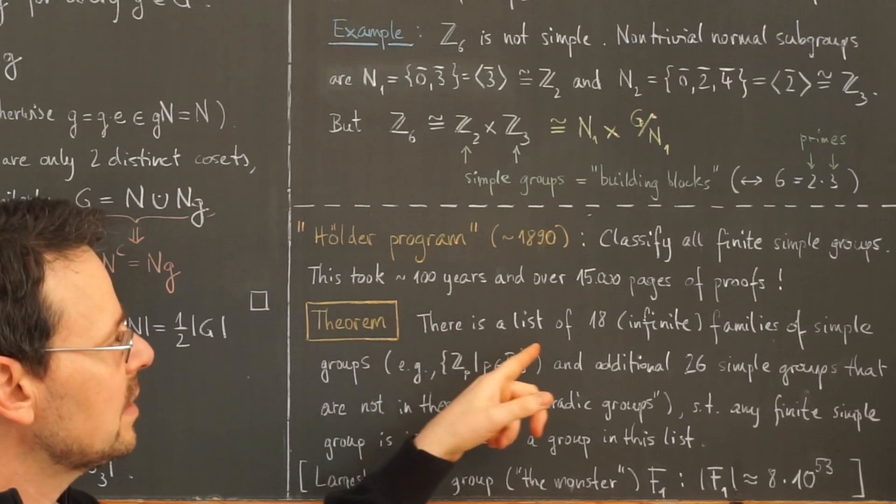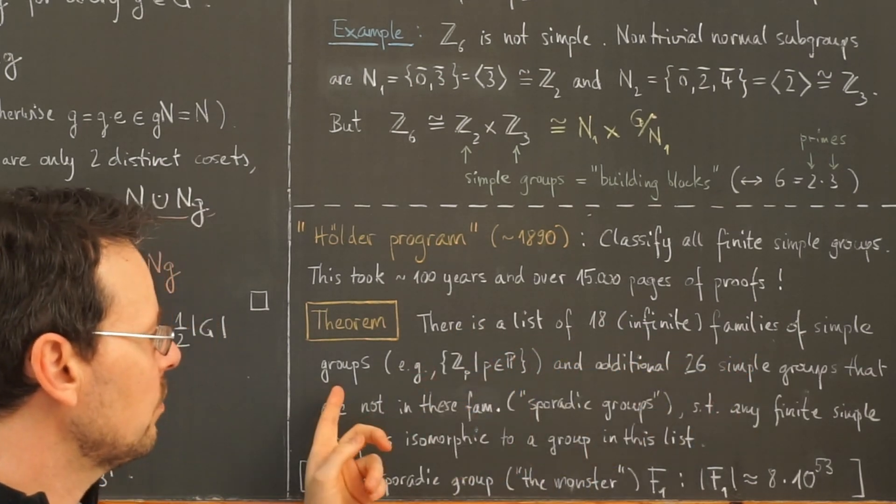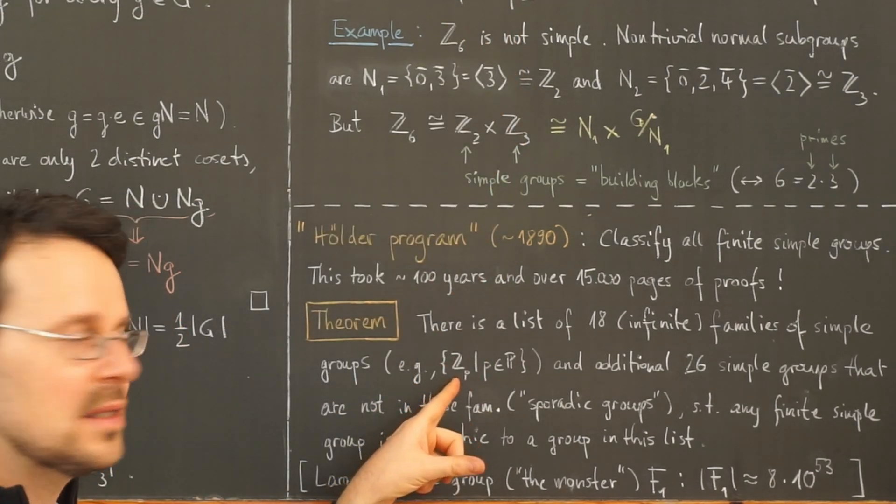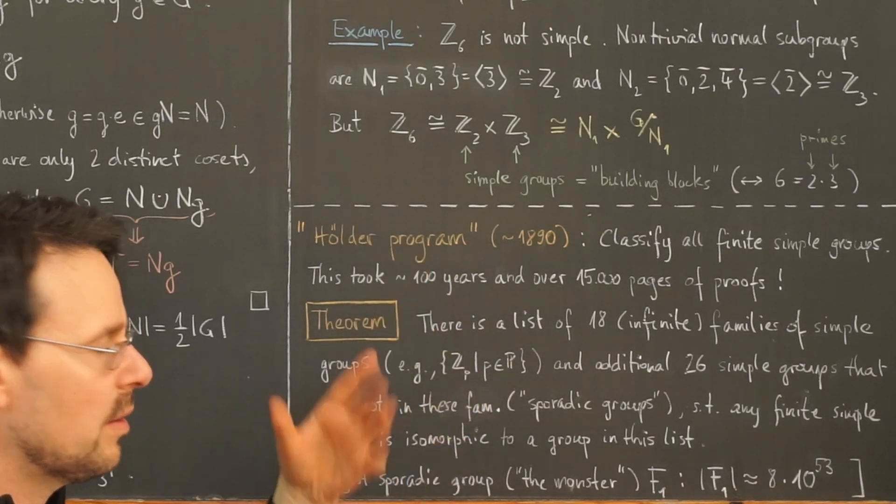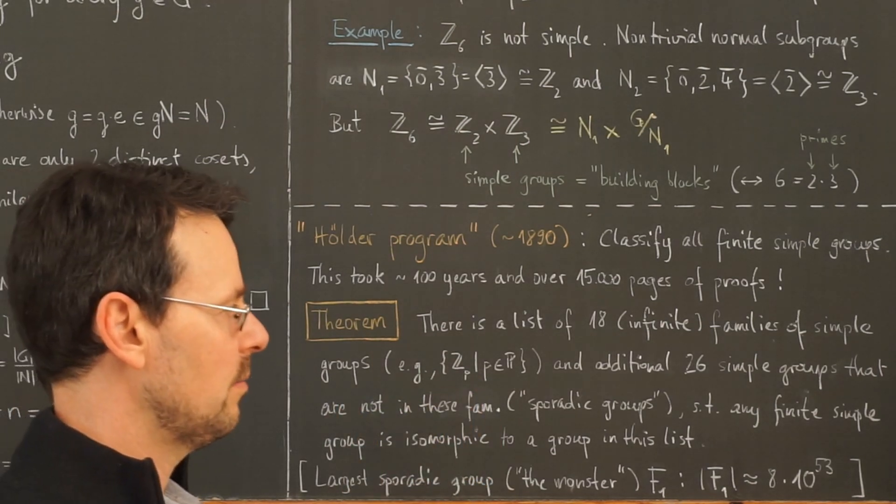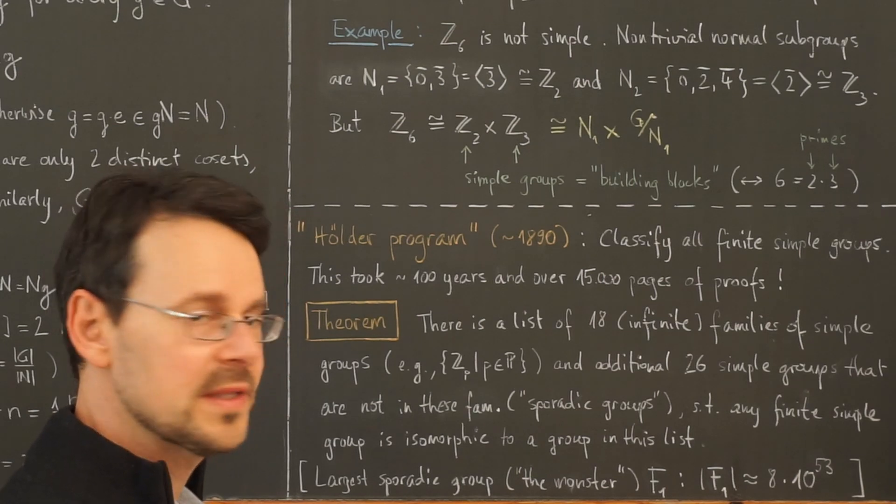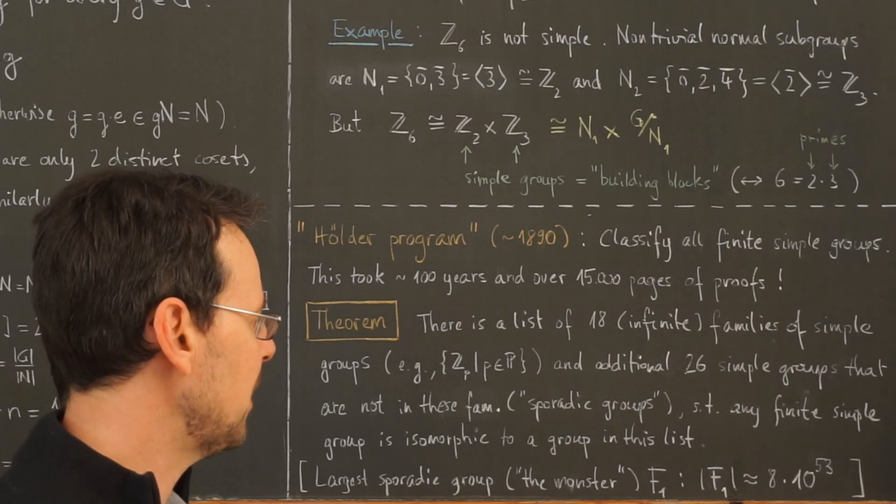And all those mathematicians came to the following conclusion. There is a list of 18 infinite families of simple groups, one we already know. This is the family of these cyclic groups here of prime order, which we just discussed. Another one would be the alternating groups, if you've heard of them from the normal subgroups of Sn for n greater than or equal to 5.